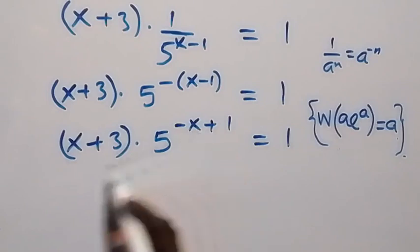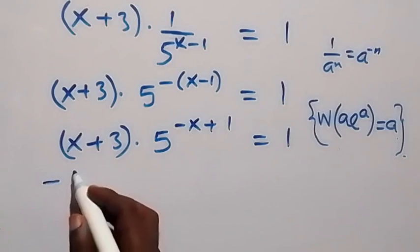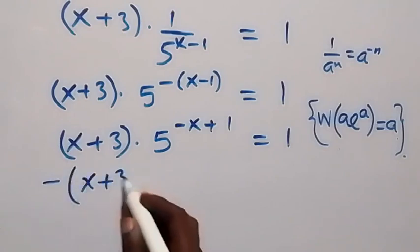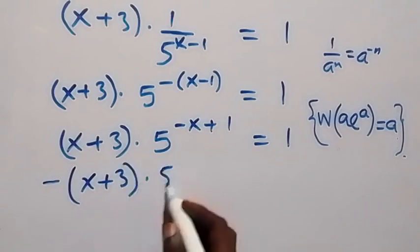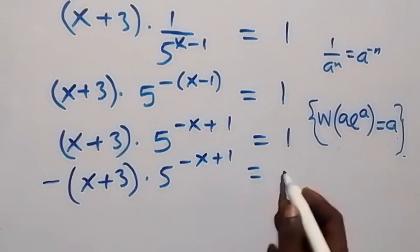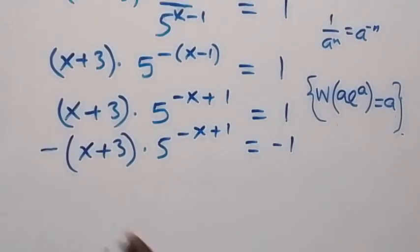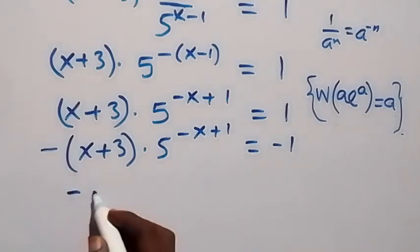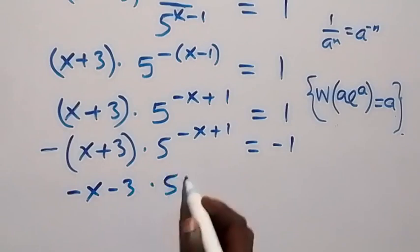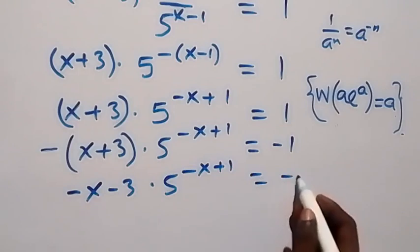Since x is having a minus, multiply both sides by minus. So we have minus 1 times x plus 3, then multiplied by 5 raised to the power minus x plus 1, and also equals to minus 1. Opening this bracket, we have minus x minus 3, then times 5 raised to the power minus x plus 1, equals to minus 1.